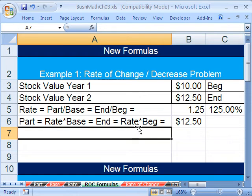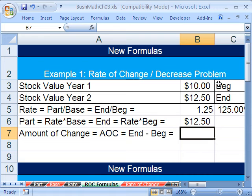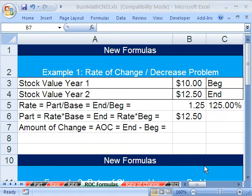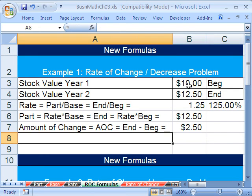Now let's do formula number two, which is amount of change. Amount of change, I was calling it equals amount of change, and that equals End minus Begin. Then you can put an equal there if you want. So the amount of change, we're going to start, oh, the End, whatever the End is, minus the Beginning should give us $2.50.